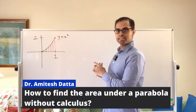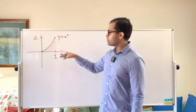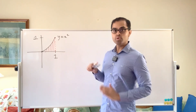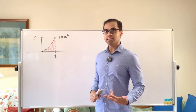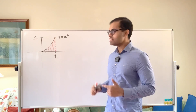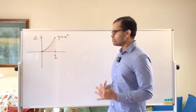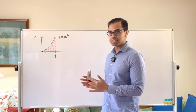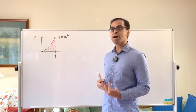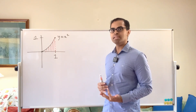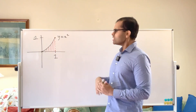This is a parabola y equals x squared, and we're going to find the area under the graph of the parabola — the shaded red area — without using calculus. For those of you who know pre-calculus and algebra but haven't seen calculus, this will be a beautiful introduction to the ideas of calculus. And for those who've seen calculus, this will give you a newfound appreciation of the fundamental theorem of calculus and of integration. So let's dive into it.